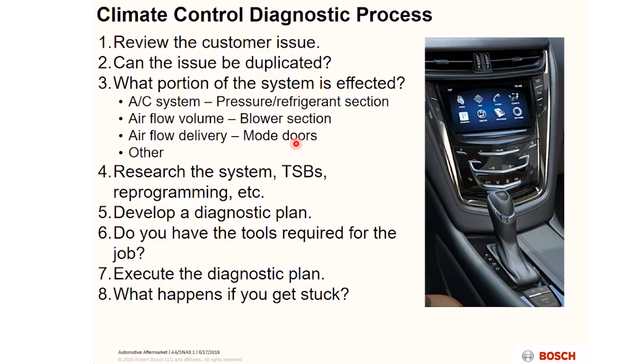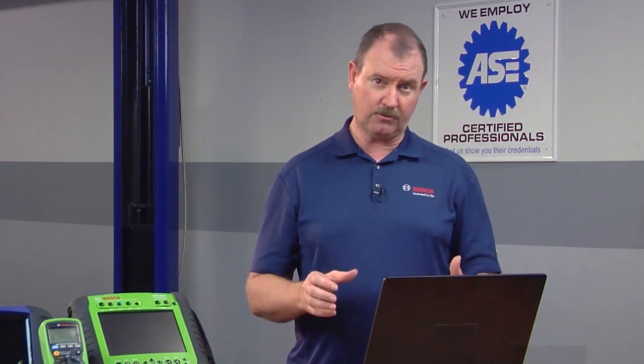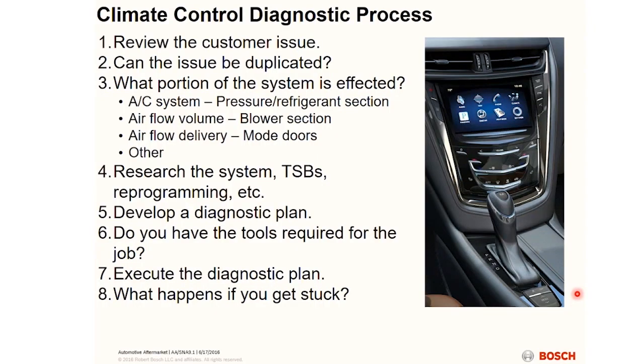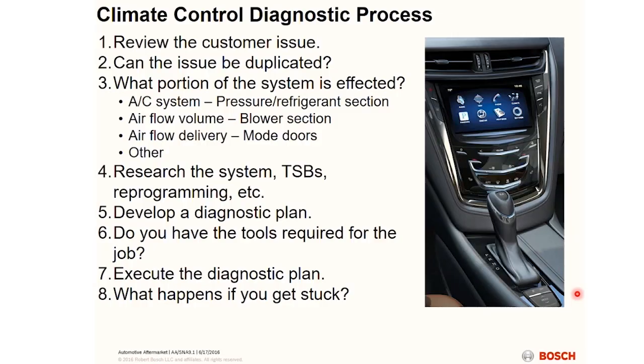I know some of the things I can do with my scan tool to help me solve the problem. Now I attack it. If during the research phase it's determined that you need to do a recalibration of the mode doors — maybe the reason the air is not blowing out the right area, whether defrost, vent, or floor, is because it needs to be recalibrated — then in your diagnostic plan you want to do that. You've got to go to your scan tool and see if you have that feature, whether to run that recalibration or turn the compressor clutch on and off. If you determine you don't have the proper tools, is there a way within your diagnostic plan to get around that? If you have all the proper tools, now you're ready to execute the plan.